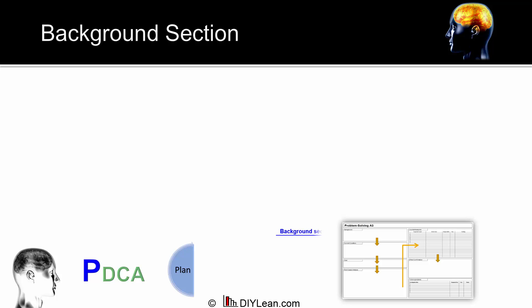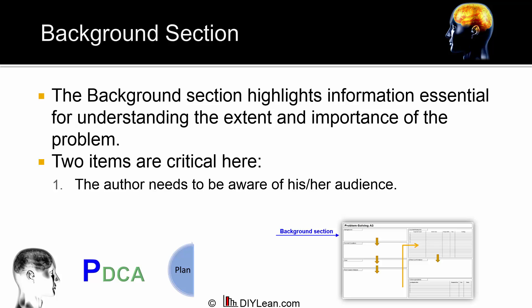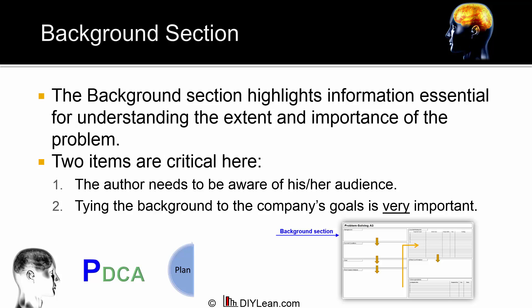The next section is the background section. This can be a short paragraph, some bullet points referring to budget objectives or site objectives, or even a small graph showing what has been the general trend for the issue. The background should be easily understood by company employees who will be reading it. It is always a good idea to tie the background information to the company's current goals or initiatives. This is the gateway to explaining why the A3 is here in the first place.